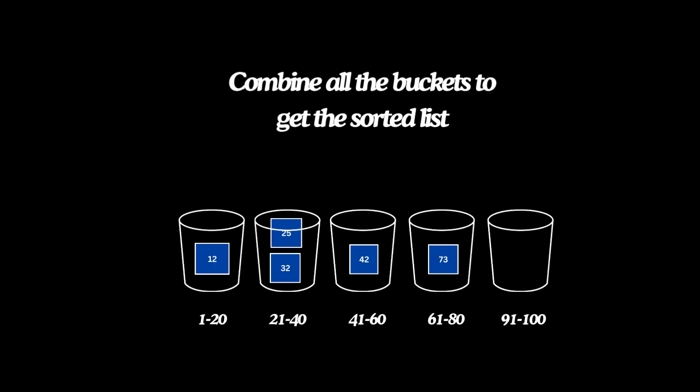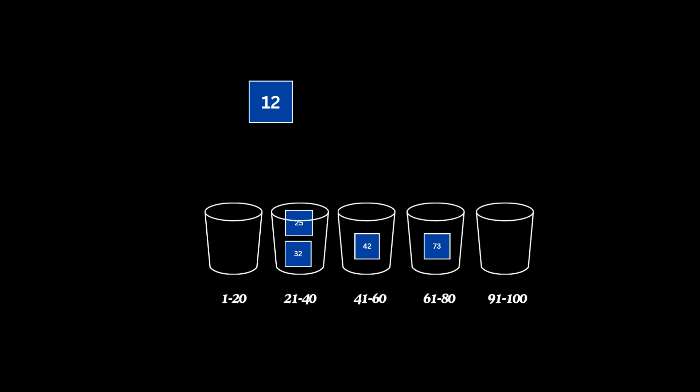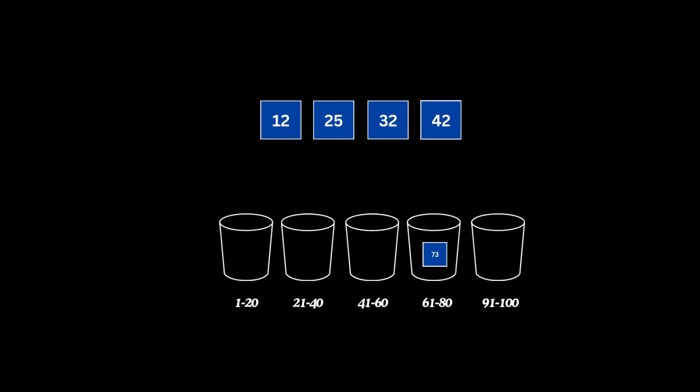Finally, combine all the buckets to get the sorted list: 12, 25, 32, 42, 73.